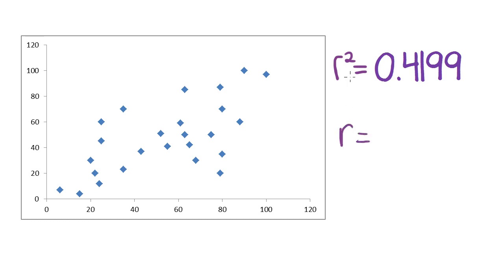So how do you work it out? We say, okay, to work out r, we're going to undo this. We're going to inverse this squared function. So we want the positive or negative square root of 0.4199, which we put in our calculator, and we get to two decimal places, positive or negative 0.65.